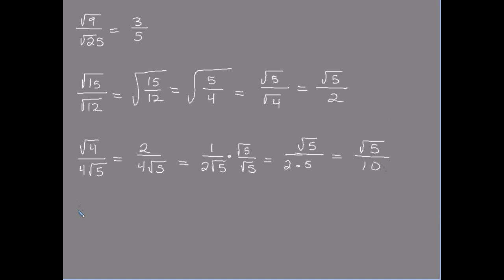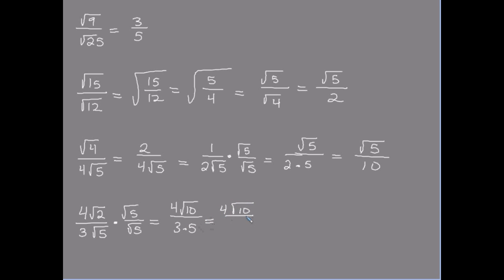For a problem like this, multiply the top and the bottom by the square root of five. I will get four times the square root of ten — because this square root of five and the square root of two multiply together — over three times five. So I get four times the square root of ten over fifteen. We check that ten can't be simplified further with a factor tree, and there's no perfect square hiding in there, so this is our final answer.